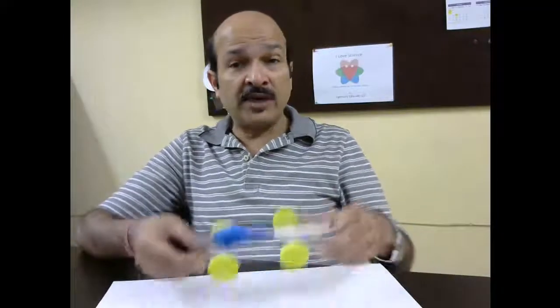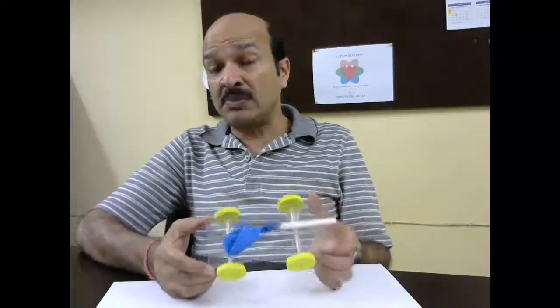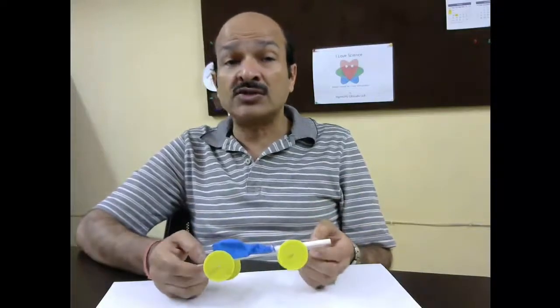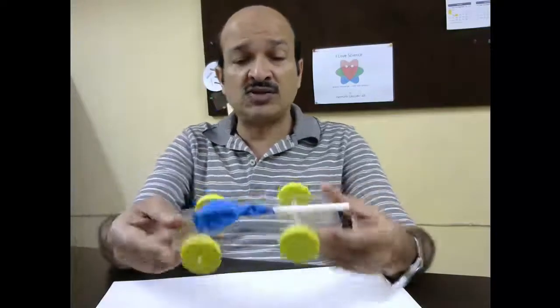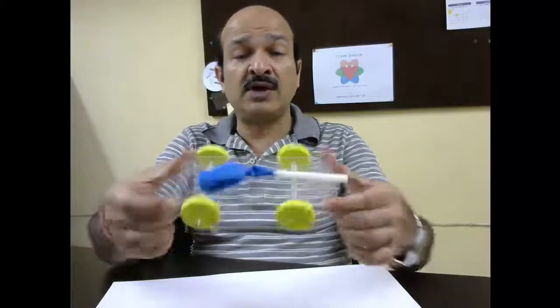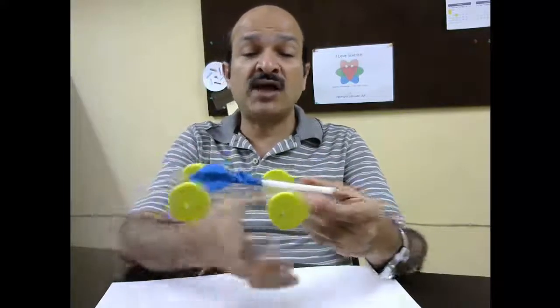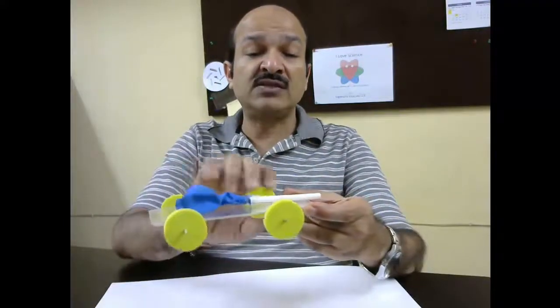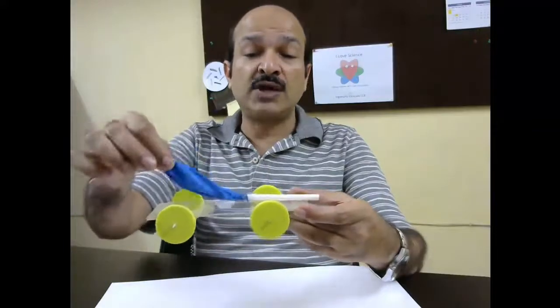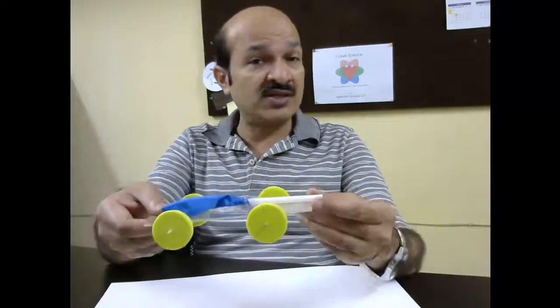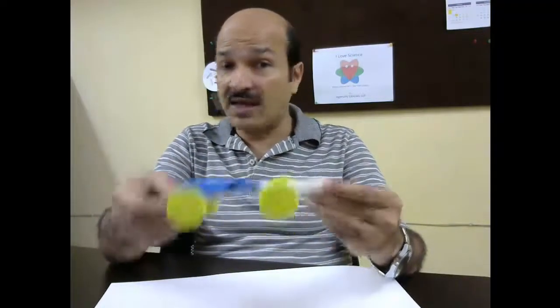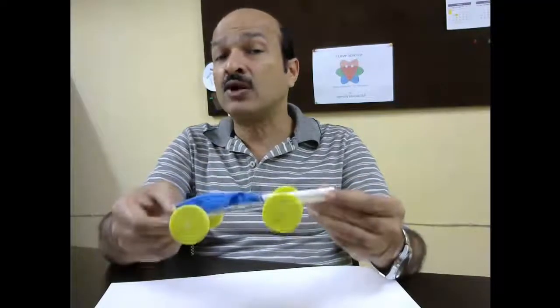I have made a little toy by which you will be able to understand all three laws of motion. So see what is this toy. There is a little plastic base on which I have four wheels and these wheels can rotate. There is a little balloon and a straw. So let's see how this toy works and then I will explain all three laws of motion.